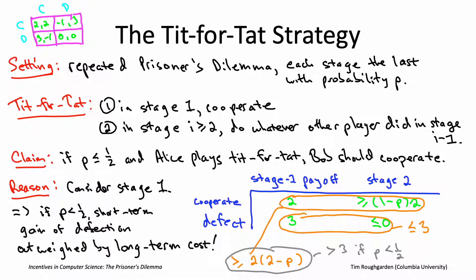The last thing I want to tell you about is the starring role tit-for-tat has played in experiments on the repeated prisoner's dilemma. About 40 years ago, around 1980, Robert Axelrod invited friends and colleagues to enter a tournament for computer programs playing the repeated prisoner's dilemma. Contestants wrote a computer program that, as a function of what had happened in the past, decided whether to cooperate or defect. There were 15 contestants in a full round-robin tournament — each program had 14 matches. Each match consisted of 200 stages, for 2,800 stages total, and the overall payoff was the average payoff across those stages.